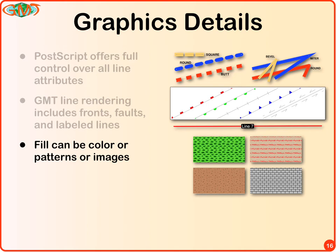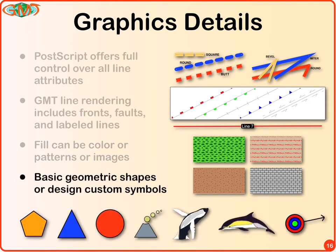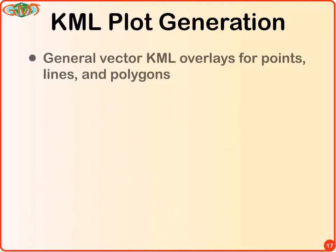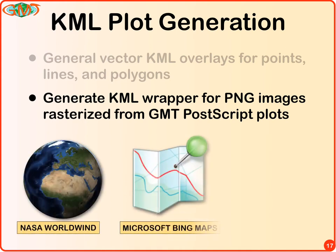PostScript attributes give us full control over what lines look like — dashed, dotted, with various end caps and bevel joints — and you can tinker with these settings to achieve a very beautiful final result. For lines, we also have fronts, faults, and label lines very useful in science. Symbols, polygons, and text can be plotted in color, or you can use patterns including geological map patterns or images like JPEGs. You can design your own symbol and use it globally. KML plot generation currently offers two forms of output: vector overlays for points, lines, and polygons with legends and labels, plus PNG image wrappers that start with a GMT plot — for example, a gravity map turned into a GeoTIFF — loaded into tools that read KML, with Google Earth being the 800-pound gorilla in that context.